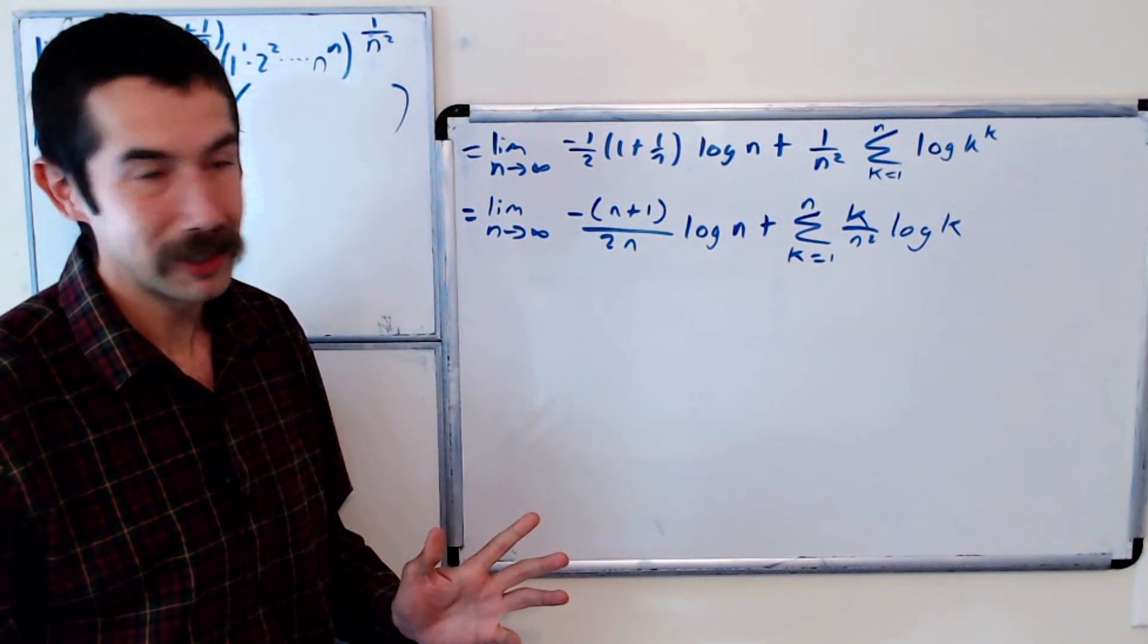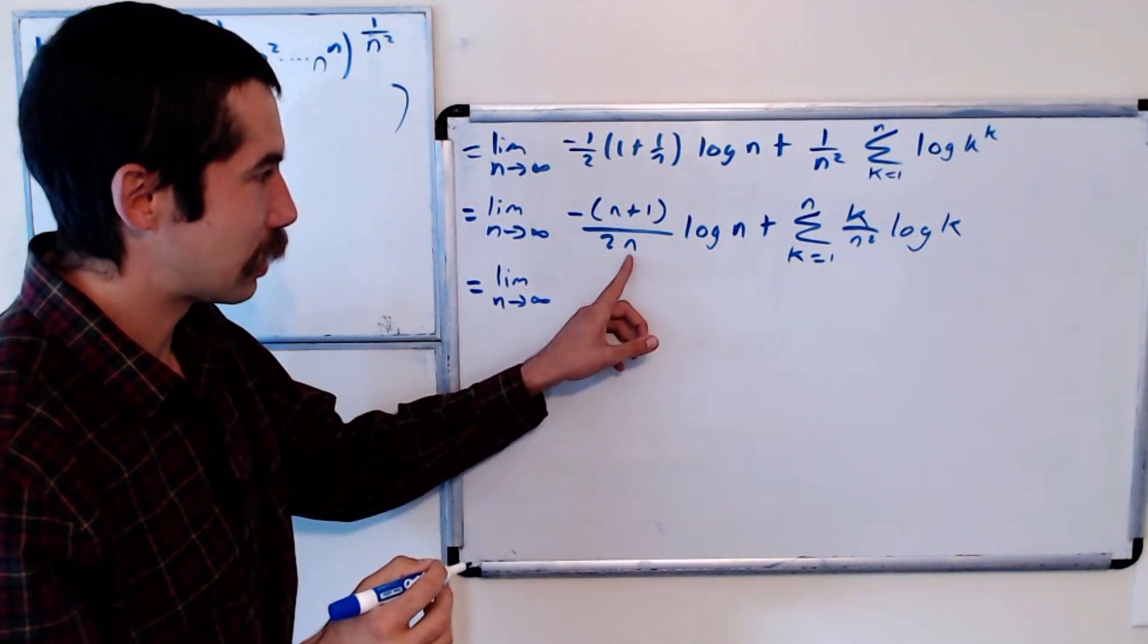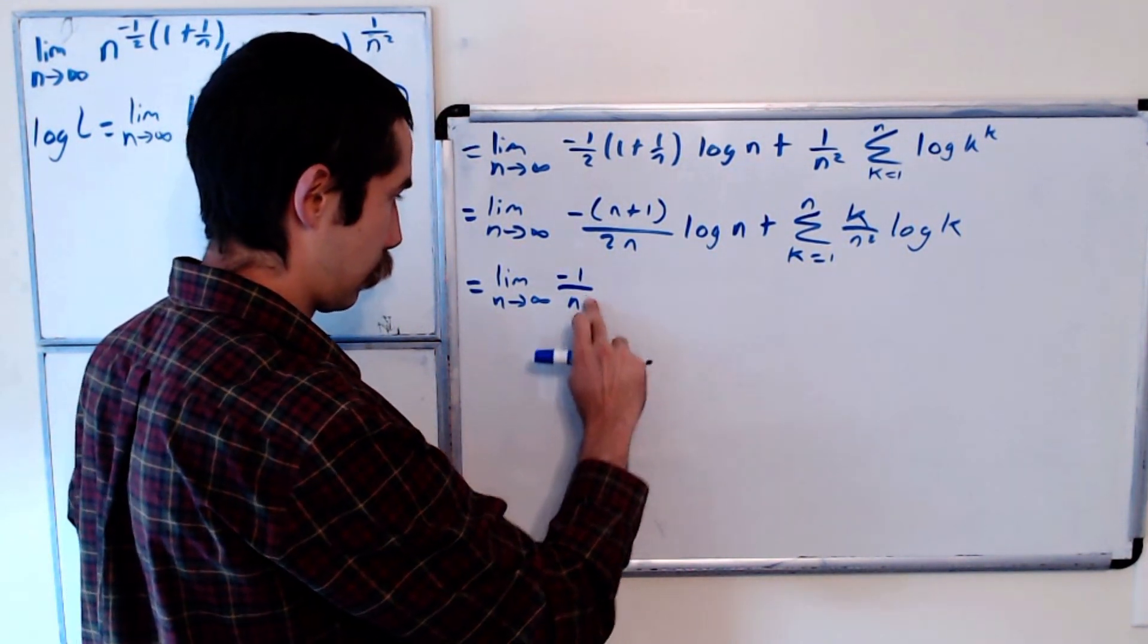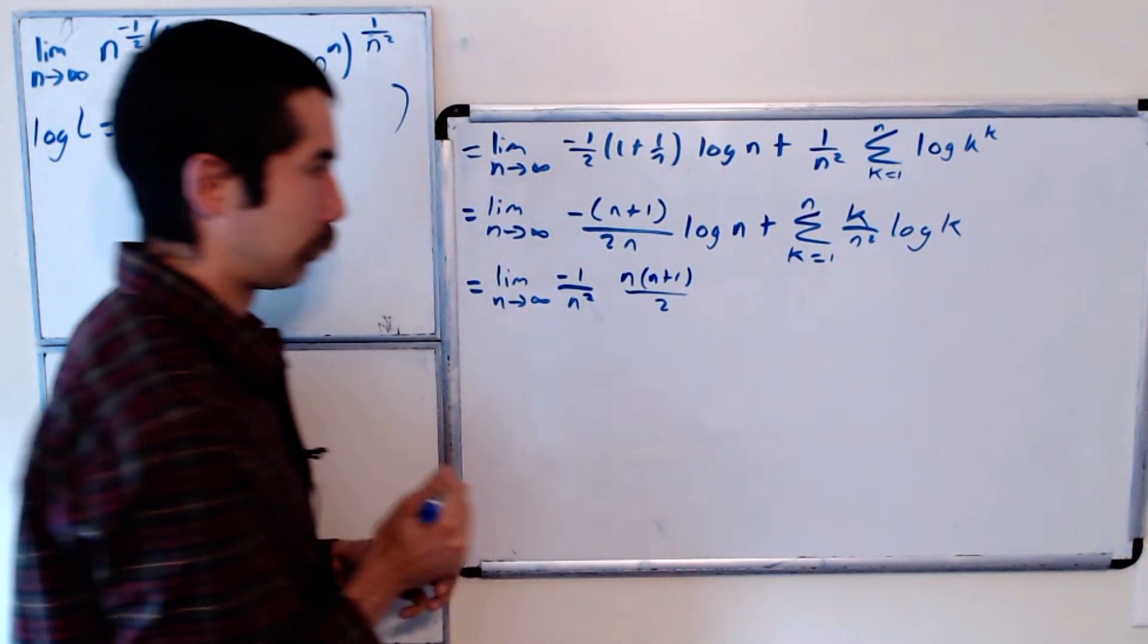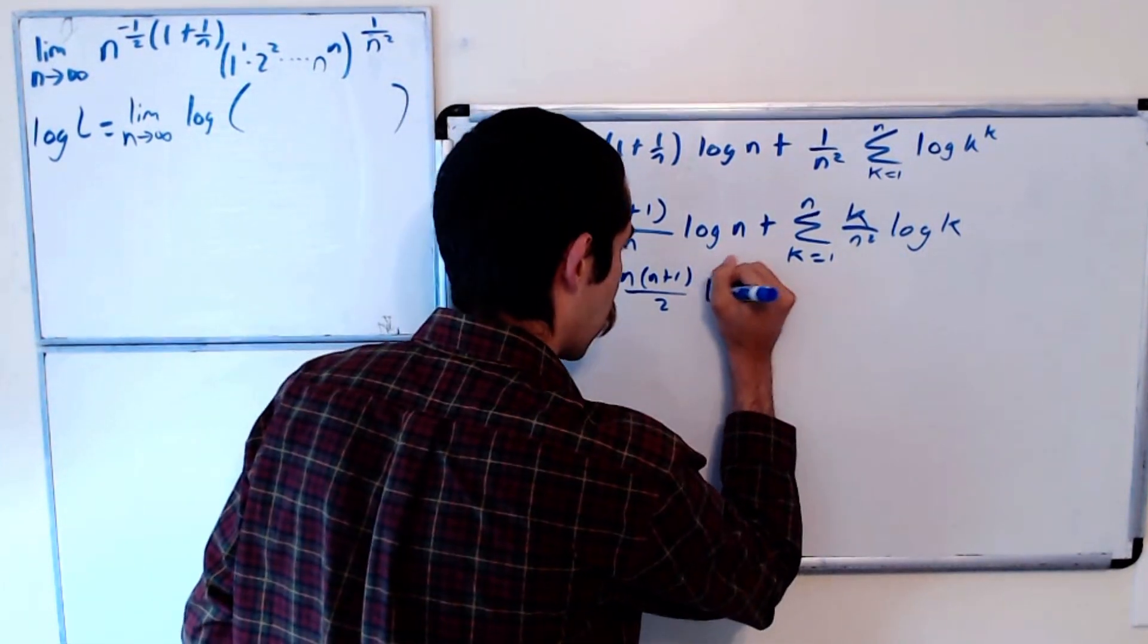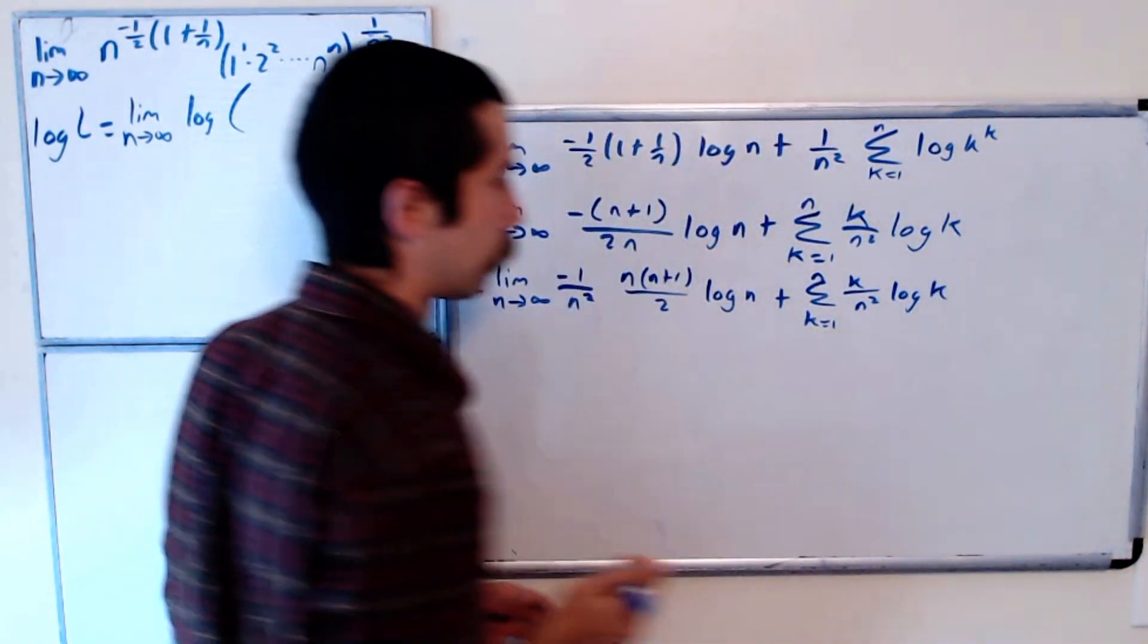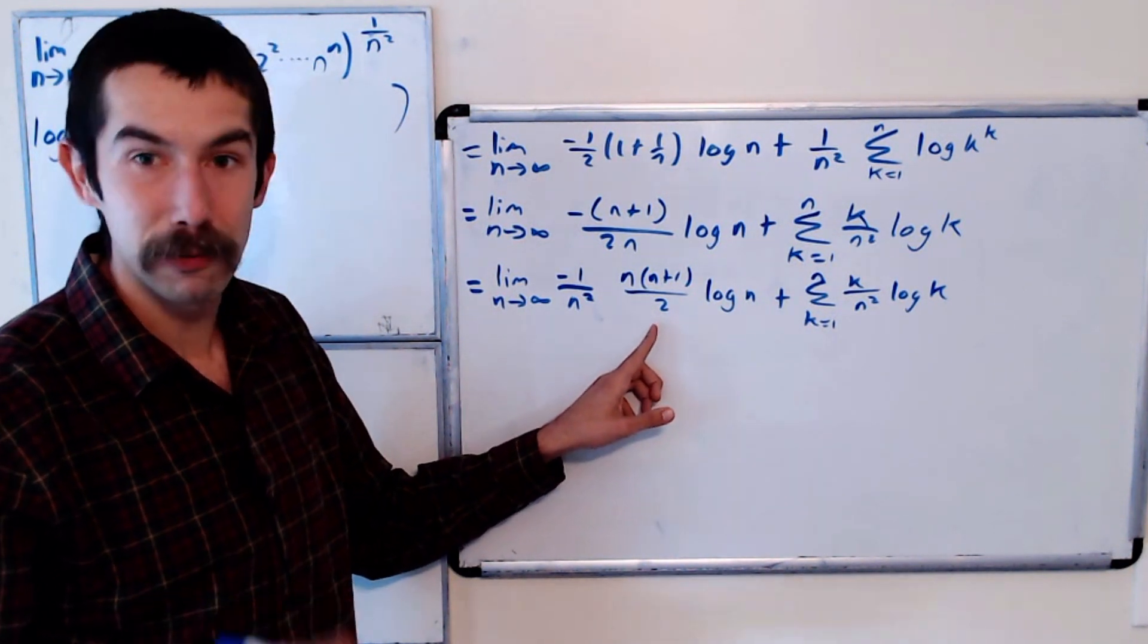All right, now we're going to do a little bit of a trick. Let's multiply this fraction numerator and denominator by n. And the reason why we're going to do this: we'll have a negative 1 over n squared, and this will become n times n plus 1 over 2. Okay, and that should look familiar. That comes in a sum identity.